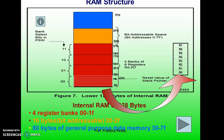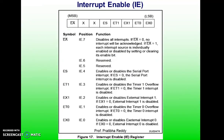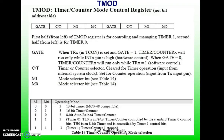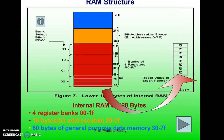To switch register banks, we access the PSW bits for bank selection. The program status word is 8 bits wide, and bits D3 and D4 are the register bank select bits. If both are 0, bank 0 is selected; 01 selects bank 1; 10 selects bank 2; and 11 selects bank 3. D3 and D4 are referred to as PSW3 and PSW4 and can be accessed by bit-addressable instructions SETB and CLR.